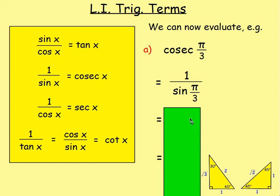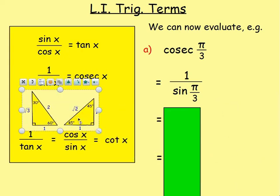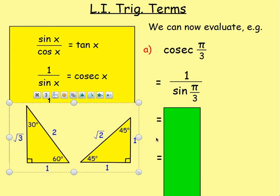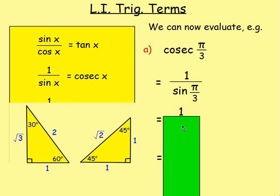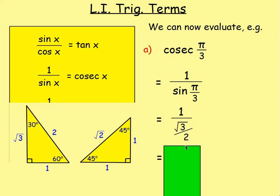From there, we work out sin(π/3). Think about it in terms of degrees — you can use your exact value triangles. Sin(π/3) is going to be root 3 over 2. So we'd end up with 1 over (root 3 over 2), which becomes 2 over root 3. Remember, if you've got a fraction divided by a fraction, you move the very bottom up to the top. So 2 over root 3 would be your answer.